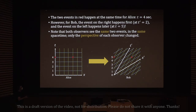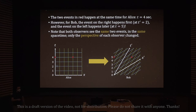Both observers see the same two events in the same space-time — only the perspective has changed. Alice sees these two events as happening simultaneously, and Bob sees them as not simultaneous. According to Bob, this event happened first and this one happens later. This is what I mean by relativity of simultaneity — the two observers don't agree on whether the events happen at the same time.